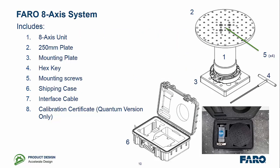Let's look at some of the product details. It comes in a self-contained box where you get the 8-axis unit itself, a 250mm plate for mounting your parts on, the mounting plate for mounting on the desk and hex keys and mounting screws to fix the two together, the shipping case and the interface cable to connect it to the arm. And if you bought the quantum version you also get the calibration certificate.